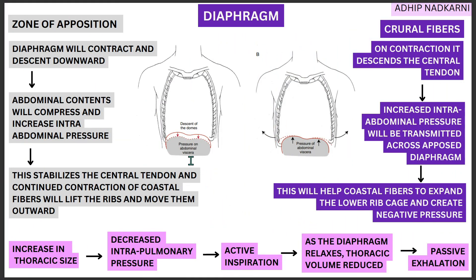So both the zone of apposition and crural fibers pull the diaphragm down, building intra-abdominal pressure. That pressure buildup, combined with continued contraction of costal fibers, lifts the ribs up and outward. This expansion of the lower ribcage creates a negative pressure — a decreased intra-pulmonary pressure inside the alveoli — which causes air to move from high pressure outside into the low pressure inside.